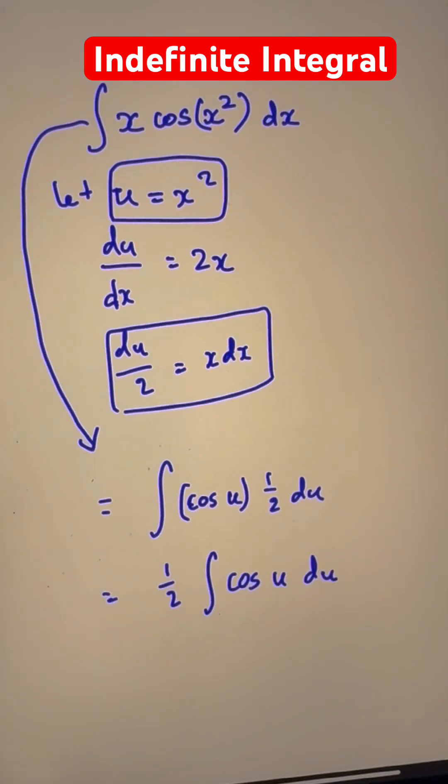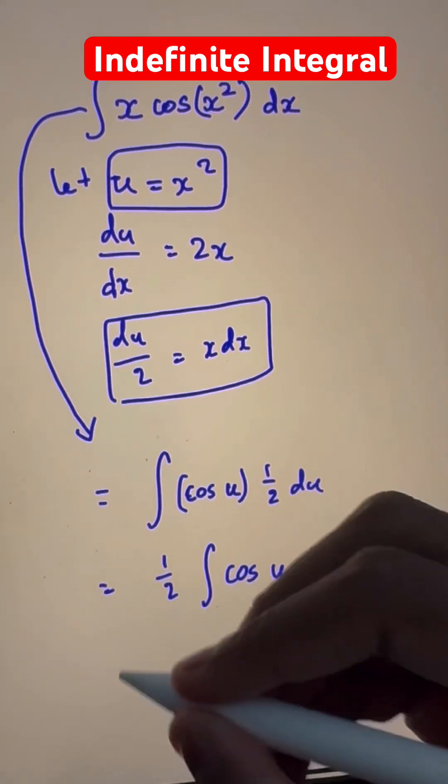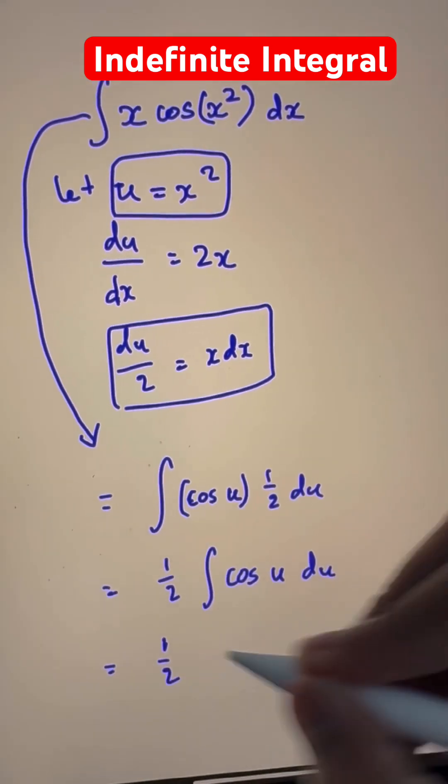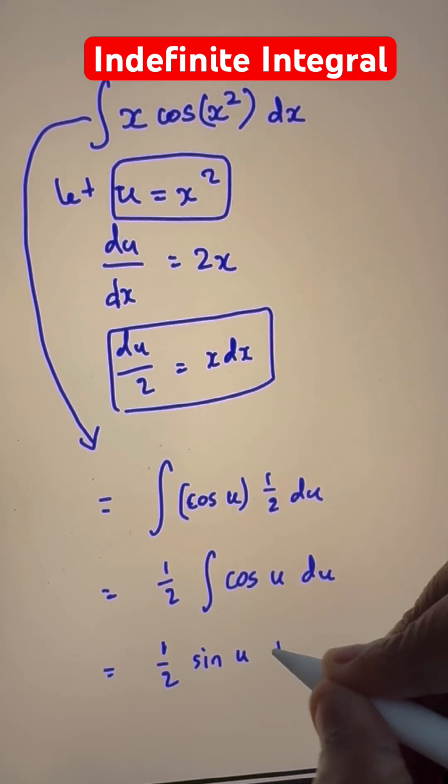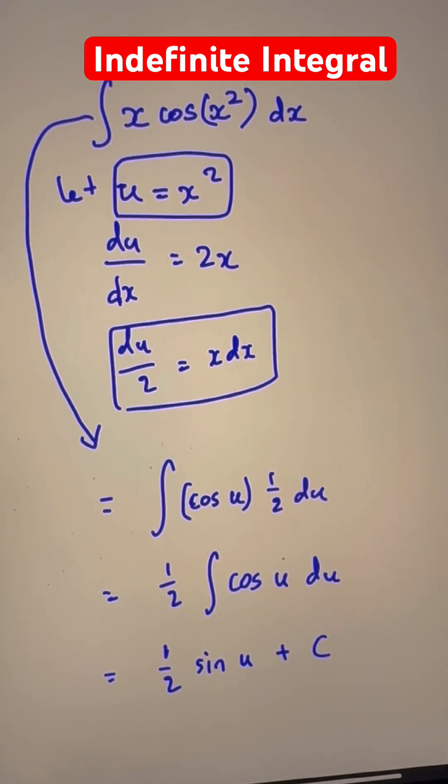And we know that the integral of cosine u is simply sine. So we just write the half as it is and sine u. And then, of course, add the constant of integration, which is the plus c.